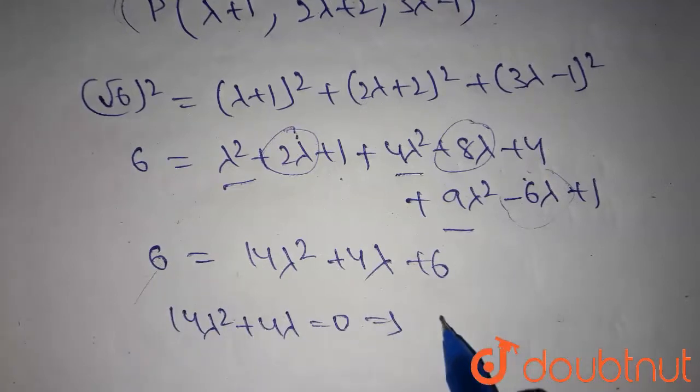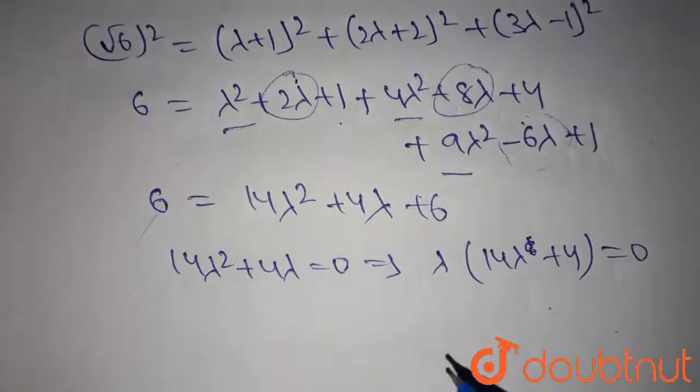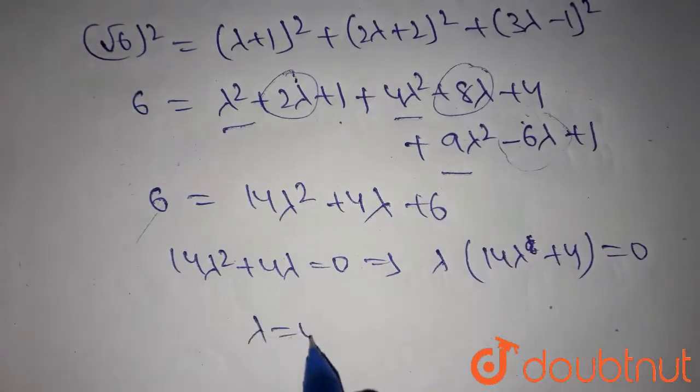Take lambda common, we get 14 lambda plus 4 equals 0. Then lambda should be equals to 0 or minus 2 by 7.